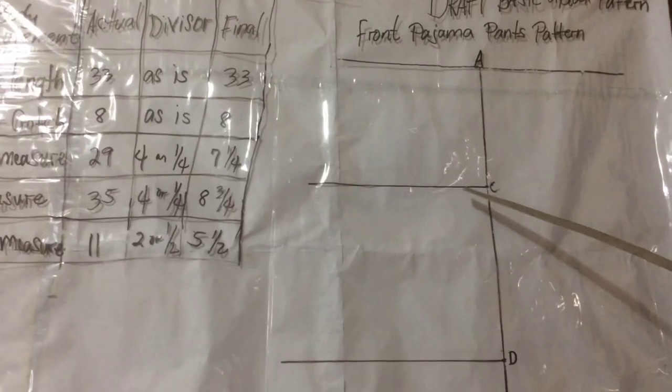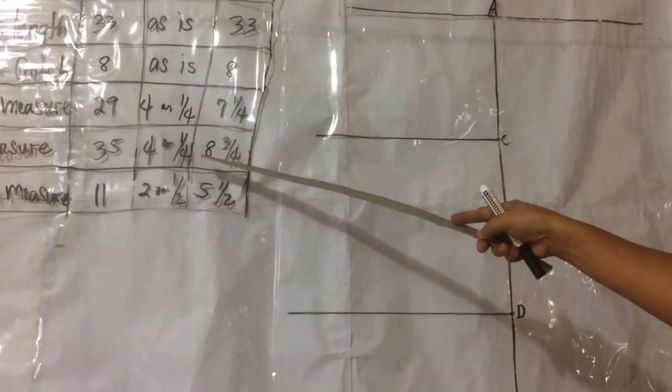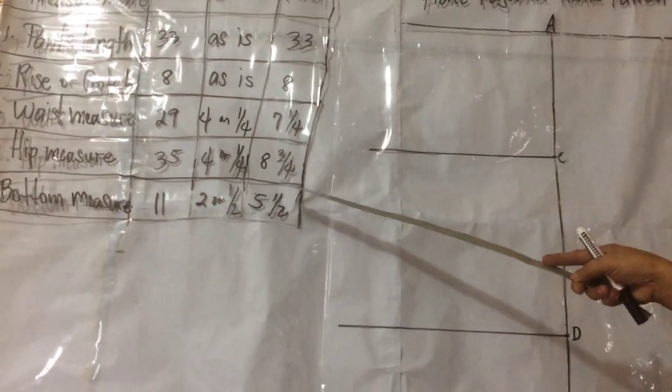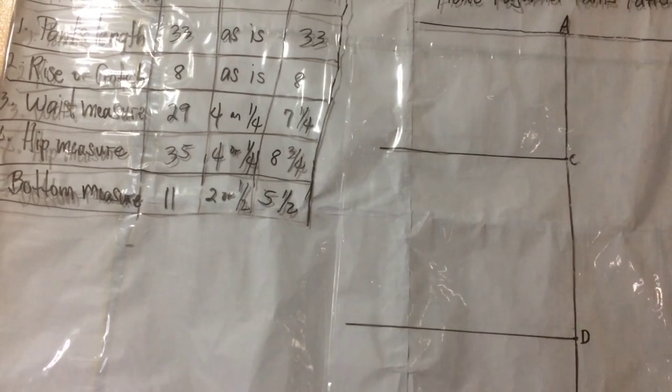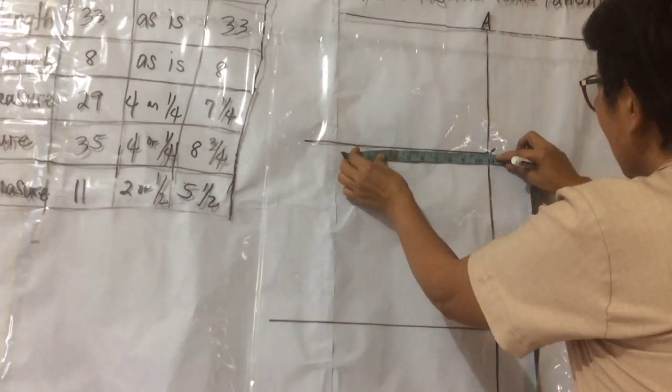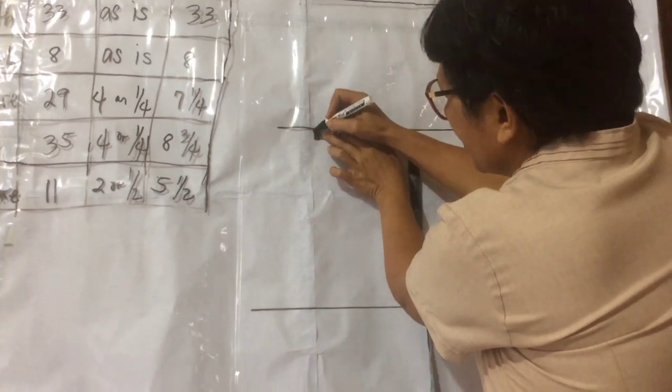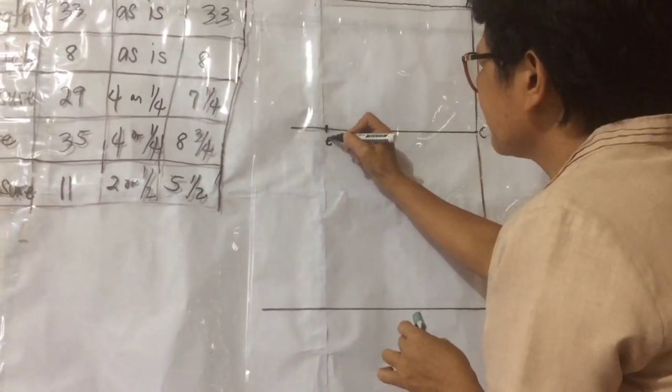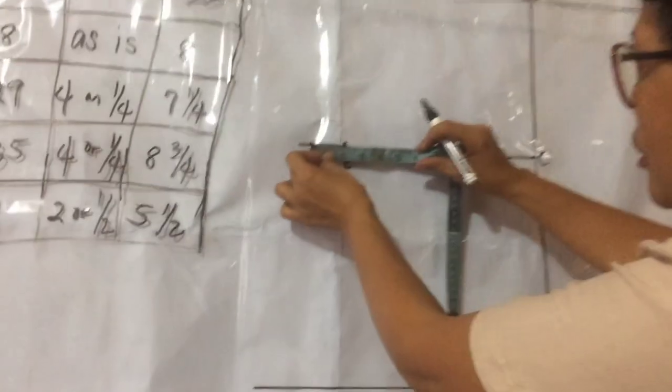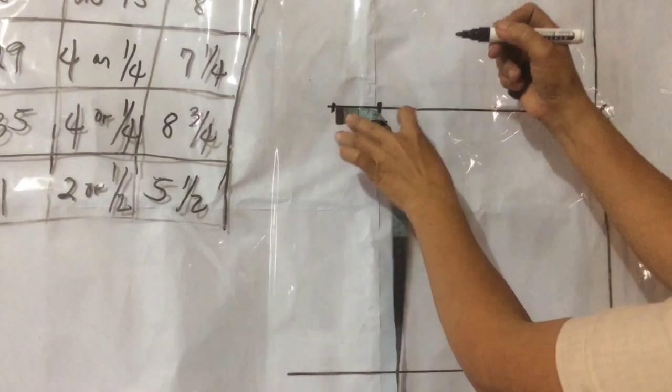From point C to the left is one fourth final hip measure plus 2 for the allowance. 8 and 3 fourths. 8 and 3 fourths plus 2, 10 and 3 fourths. From point C, measure 10 and 3 fourths, 1 inch. Mark E. From point E, measure 2 inches to the left. Mark G.